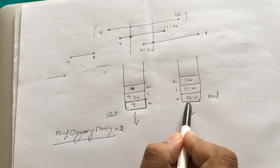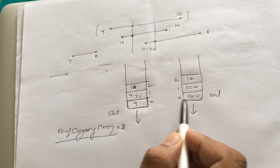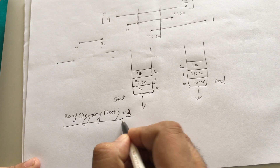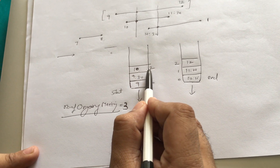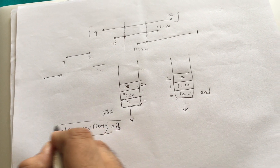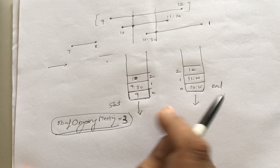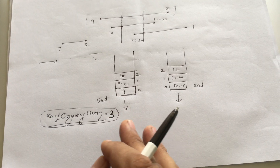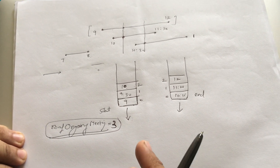At start time 10, still no meetings have ended, so the number of ongoing meetings becomes 3. At this point the start array is exhausted, so we need 3 meeting rooms. This is how we calculate the minimum number of meeting rooms required.